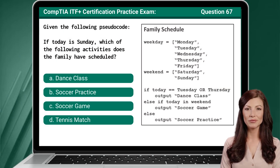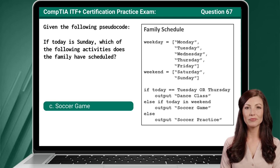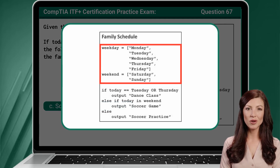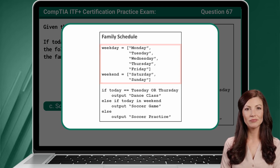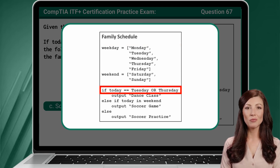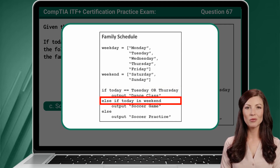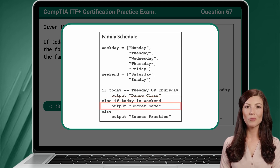Question 67. Given the following pseudocode, if today is Sunday, which of the following activities does the family have scheduled? The answer is C: Soccer game. In this coding example, we start by declaring two containers, one for weekday and one for weekend. We encounter an IF branching statement checking if the current day, Sunday, equals Tuesday or Thursday. Since it does not, we move to the ELSE IF branch, which checks if Sunday exists in the weekend container. Since it does, we output the string 'soccer game.'